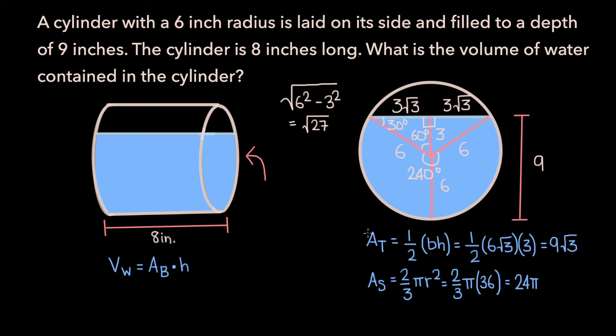And if we sum up the area of the triangle and the area of the sector, we get the area of the base, which is 9 root 3 plus 24 pi.